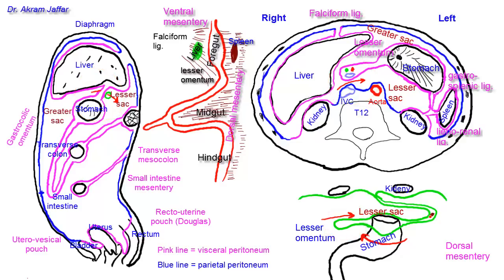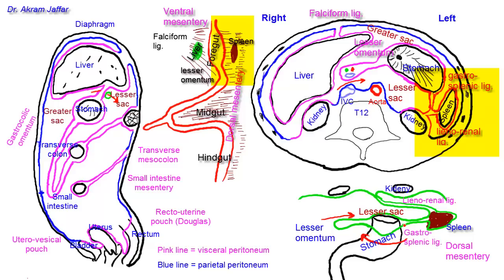To complete the picture, the spleen grows in this dorsal mesentery and is covered by the peritoneum because it grows within it. Therefore we have two folds of the dorsal mesentery: one between the spleen and the kidney — the lienorenal ligament — and the other between the spleen and the greater curvature and fundus of the stomach — the gastrosplenic ligament.